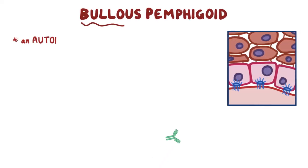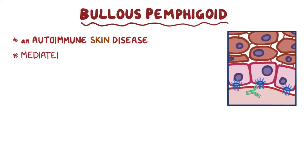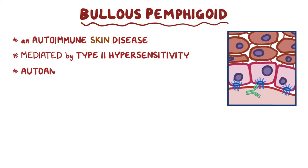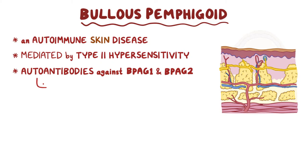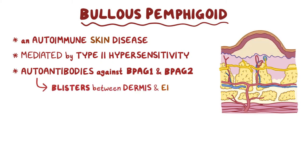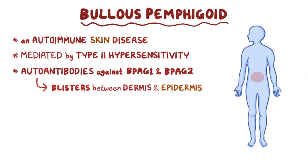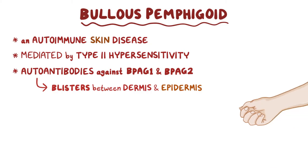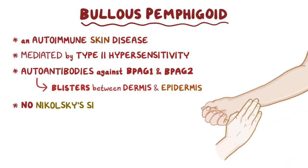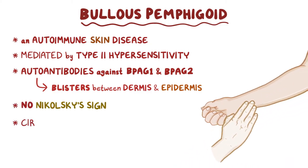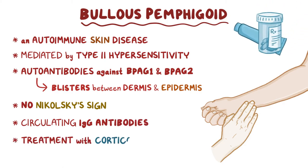As a quick recap, bullous pemphigoid is an autoimmune skin disease mediated by type 2 hypersensitivity. Autoantibodies form against BPAG1 and BPAG2, and they allow blisters to form between the dermis and epidermis layers of the skin. Large tense blisters on the lower abdomen, arms, and legs are the most common symptom. There is no Nikolsky's sign, but there are circulating IgG antibodies, and this condition is usually treated with corticosteroids.